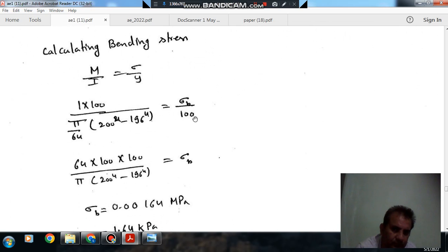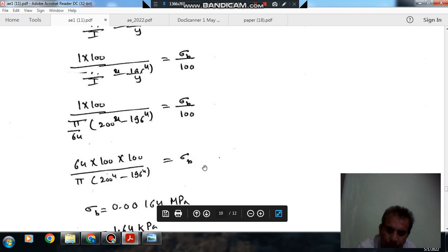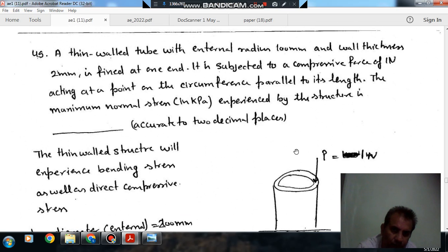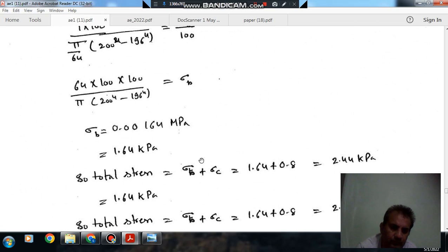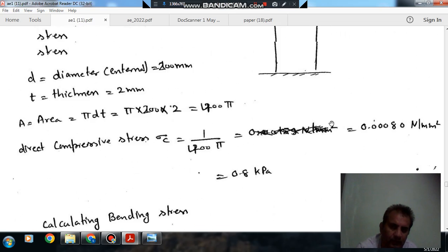Taking outer radius, sigma B bending stress can be derived, which is 1.64 kPa. The compressive stress is uniform in this thin wall tube. So the total stress will be sigma B plus sigma C at the outer radius. This is 1.64 plus 0.8, which equals 2.44 kPa.